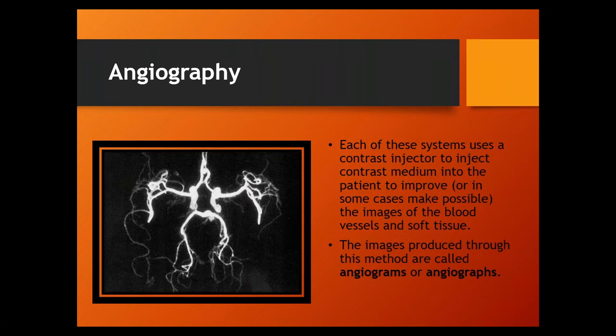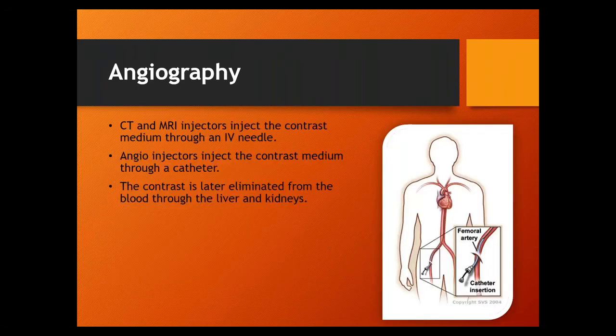Each of the three systems uses an injector to inject the contrast medium into the patient to improve, or in some cases make possible, the viewing of blood vessels. The images produced are referred to as angiograms or angiographs. For CT and MRI injectors, they use an IV needle - which typically goes in the arm or back of the hand.